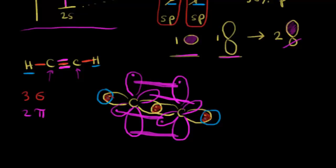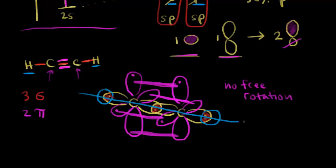Pi bonds prevent free rotation, so we can't rotate about the sigma bond between the two carbons because of the pi bonds — no free rotation for our triple bond. We also have a linear shape, giving this linear geometry for the molecule. In terms of bond length, the distance between the two carbons in acetylene is approximately 1.20 angstroms — an even shorter bond length than in our previous video, due to the increased s character. Increased s character gives smaller orbitals, which is one way to think about the shorter bond distance in a triple bond compared to a double bond or single bond.